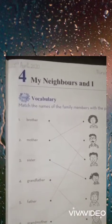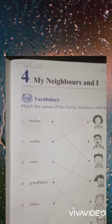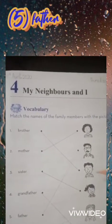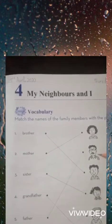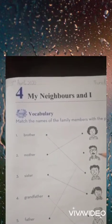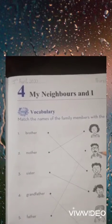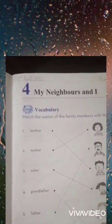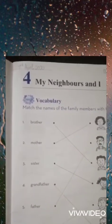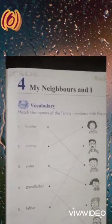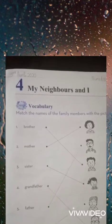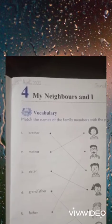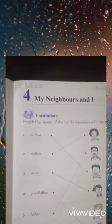Now the fifth one is 'father.' The second picture is the picture of a father — he seems young — so we will match it with number five. Now the last one is 'grandmother.' The second-to-last picture is the picture of a grandmother, so we will match it with number six.